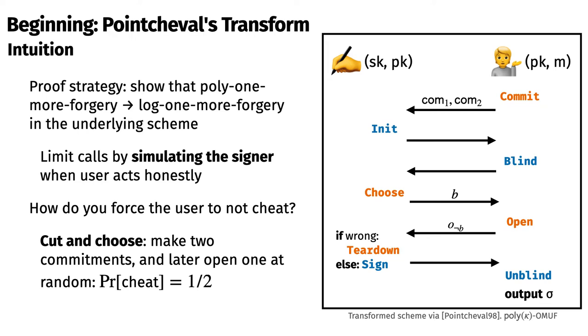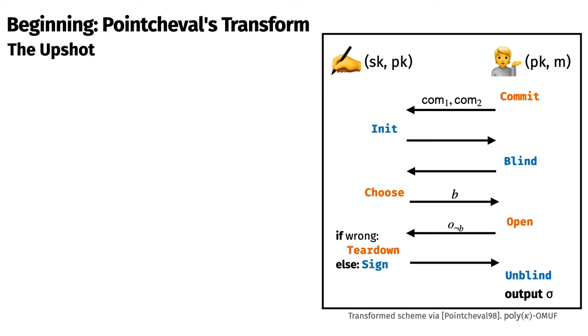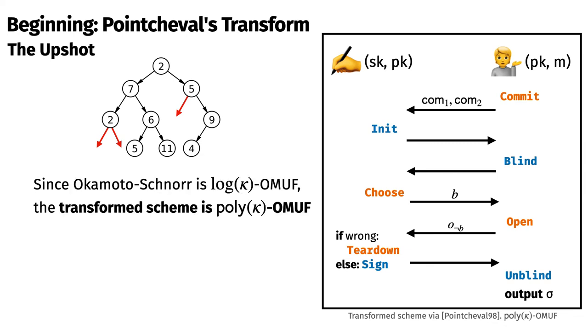Does this achieve security for polynomially many signatures? Yes, it does. The reduction goes through and we get a log one-more forger. There's a neat proof that does this by showing that if a potentially dishonest user's execution tree with a transformed scheme has polynomially many leaves, then not too many of its branches could have been pruned, i.e. it could have only cheated logarithmically many times, hence the log one-more forgery. So, since the number of cheating attempts is logarithmically bounded after polynomially many interactions, and since blind Okamoto-Schnorr is shown to support logarithmically many signatures, Poincheval concludes that the transformed scheme supports polynomially many signatures.